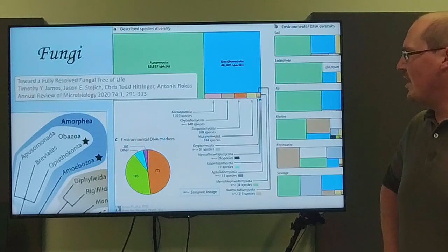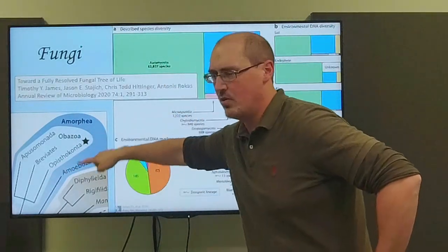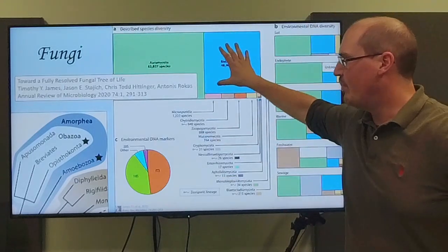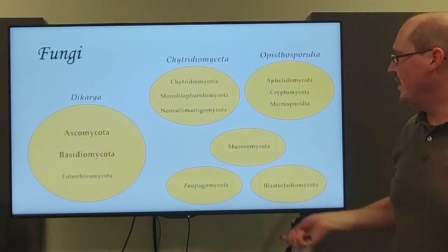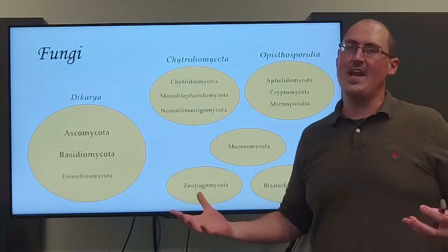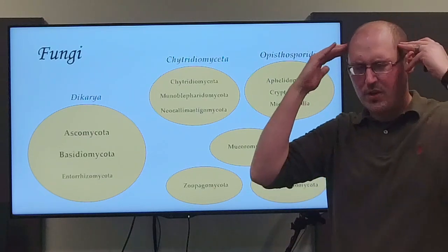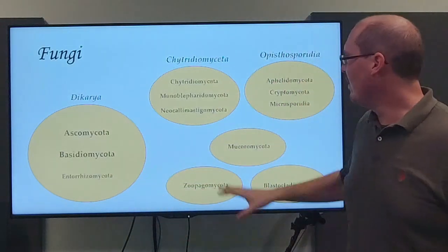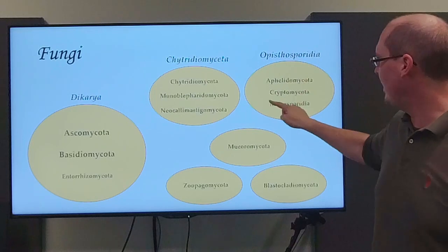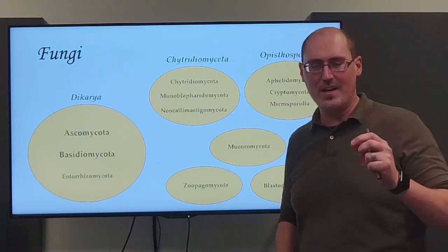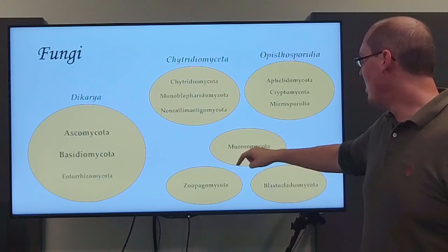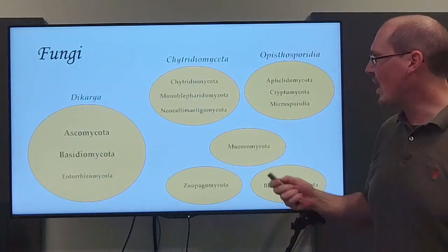Moving along to another major group, we have fungi. These are also actually Opisthokonts, so closely related to animals. And they are notable for having chitin in their cell walls. Now there are two major phyla that make up the bulk of all species, and then a bunch of minor phyla. These being phylogenetic groupings, there's the Dikarya, which have Ascomycota and Basidiomycota. These are really any mushroom, fungi, puffball, whatever. If you think of the word fungus, it's probably one of these. Then there's the Chytridiomycota, Blastocladiomycota, Neocallimastigomycota, which are various forms. Cryptomycota are hidden fungi, these notably lack chitin. A couple other phyla, including Mucoromycota, which includes mold, like bread mold.